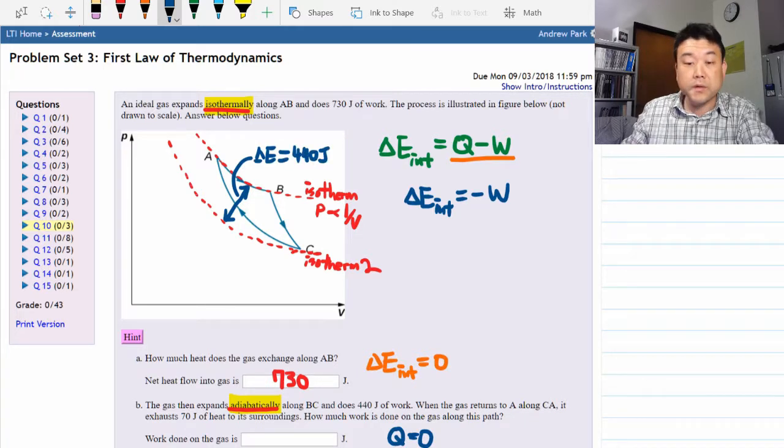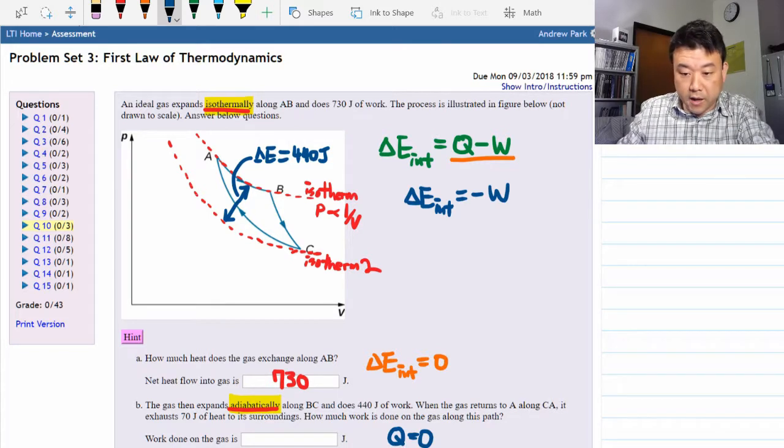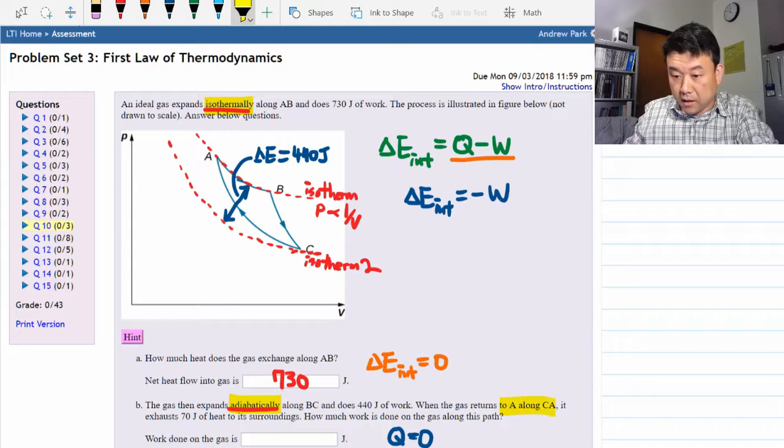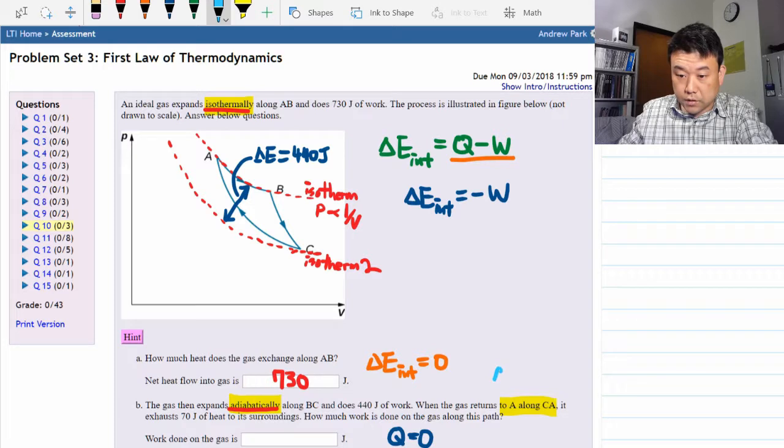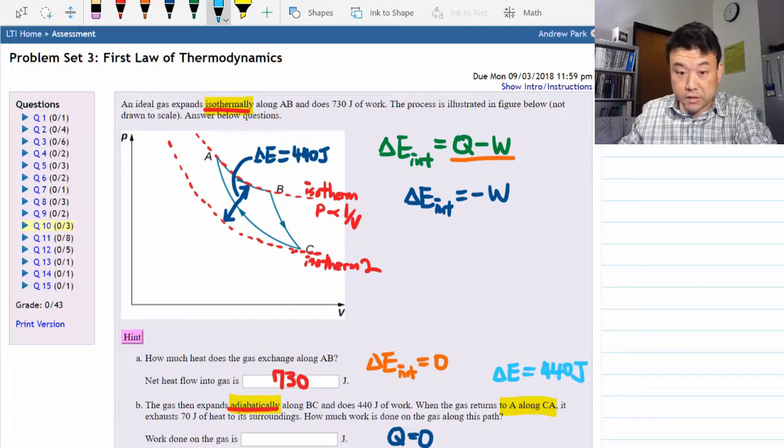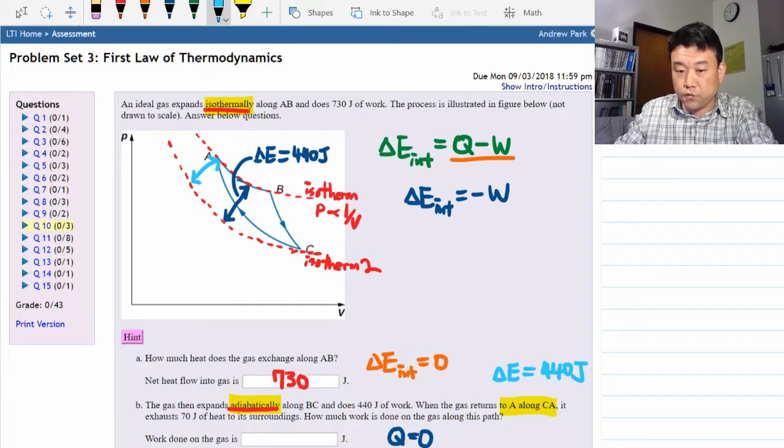Amount of work done as the gas goes from point B to C. That's useful information to have because then as the gas returns to A we know the change of internal energy. Change of internal energy for this case is equal to 440 joules. It's the distance between the isotherms. It doesn't matter exactly from which point on one isotherm to which point you are going. The change in the energy is the same.